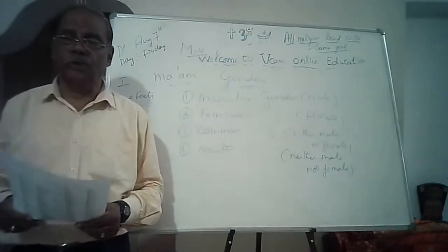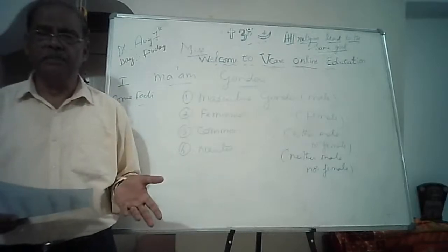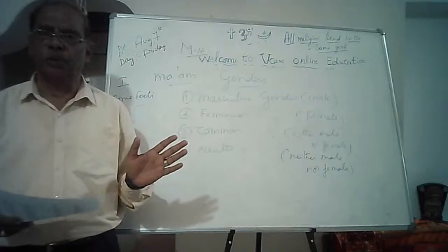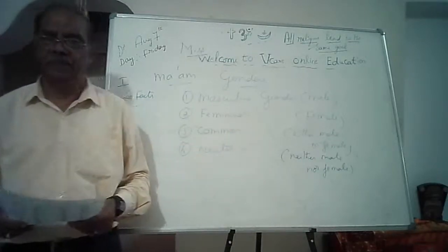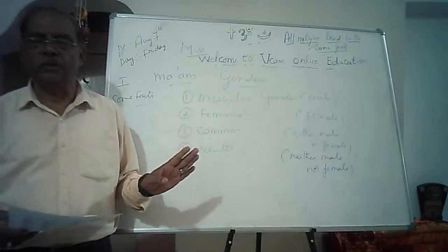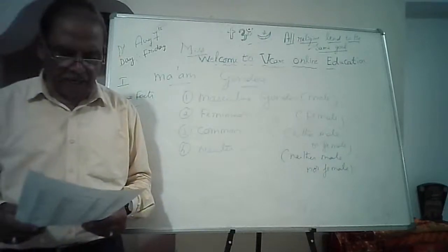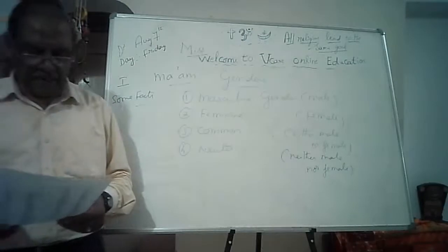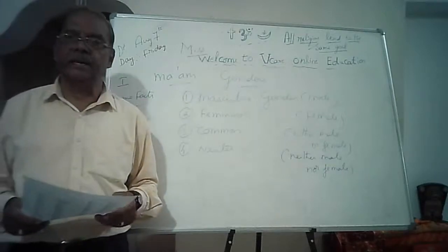For dog: dog is a male; the female is called bitch — B-I-T-C-H. But you should not use that word as it is considered offensive in other contexts. If you happen to see a female dog, say she dog; if you see a male dog, say he dog. Drake and duck — drake is the male, duck is the female. For eagle, it is eagle only — it is a common gender; for male you call eagle, for female you also call eagle.